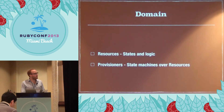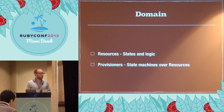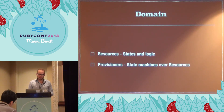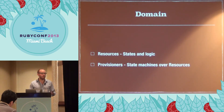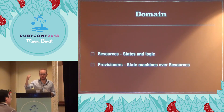At the domain layer, we have resources which have states and logic. Then there are provisioners, which are state machines over these resources. For example, an image has a pending state, a building state, a built state, a destroyed state, et cetera. The provisioner is the state machine that's going to run through all those states with transitions using success and failure.